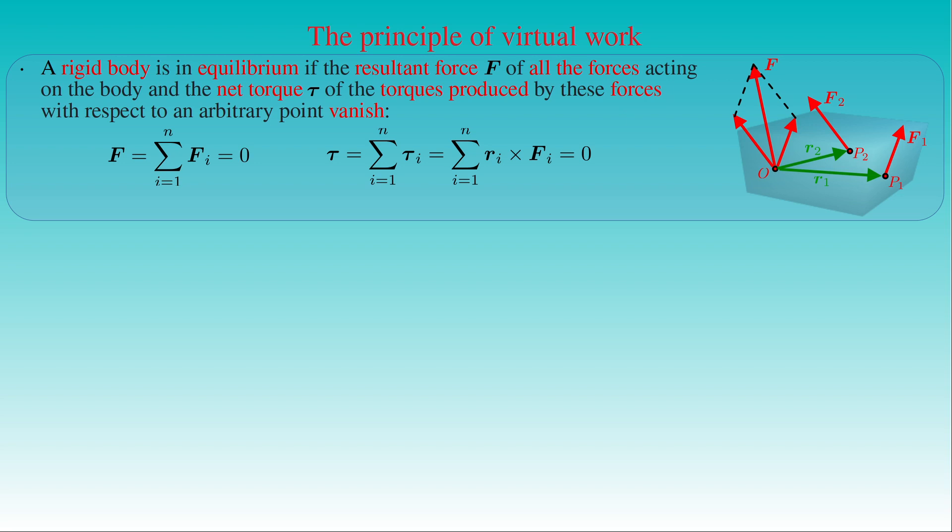If the forces F1, F2, ..., Fn are applied on the body at the points of application given by the position vectors R1, R2, ..., Rn, then this condition is formulated by two equations: the vector sum of the forces Fi from i equals 1 to n is equal to 0, and the vector sum of the torques tau_i produced by the forces Fi — that is, the cross product of the position vector Ri and the force Fi — from i equals 1 to n also vanishes.